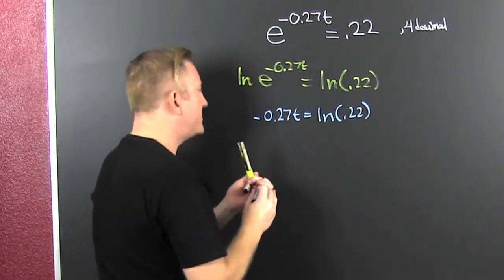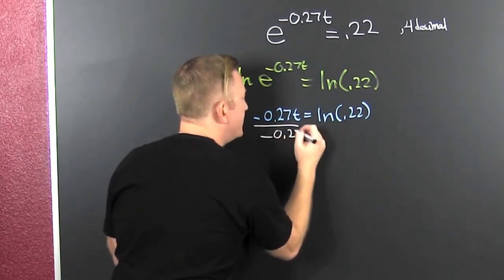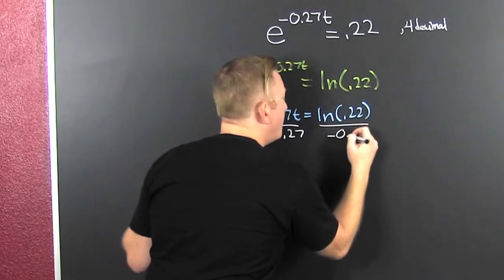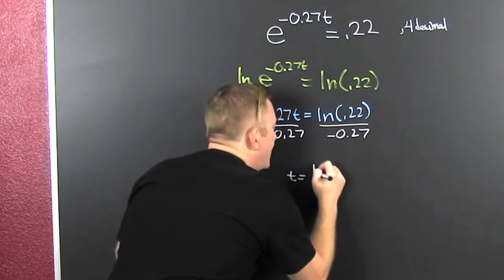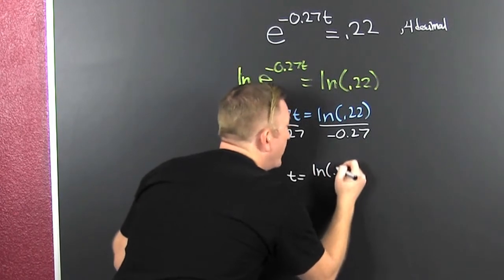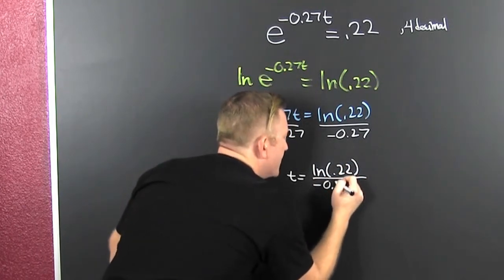Then we divide both sides by the coefficient on t. That's minus 0.27. Then our t turns out to be the natural log of 0.22 divided by minus 0.27.